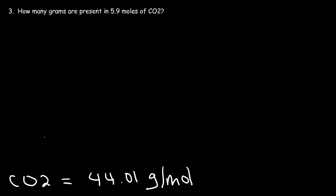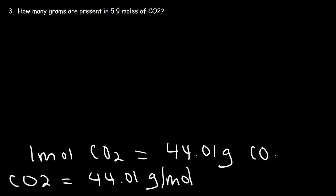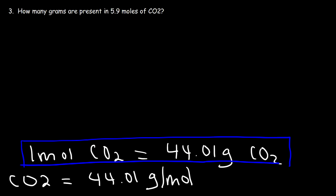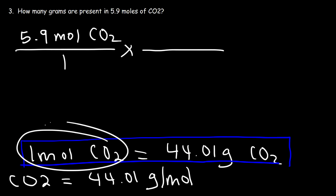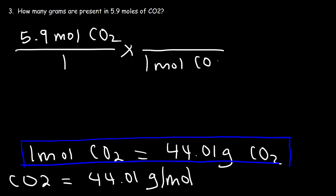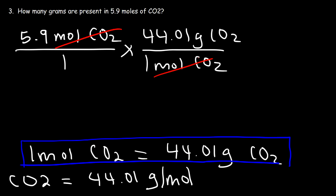Now we can write our conversion factor: one mole of carbon dioxide (CO₂) has a mass of 44.01 grams. Once we have our conversion factor, we can convert from moles to grams. Start with what we're given: 5.9 moles of CO₂. In the second fraction, 1 mole of CO₂ goes on the bottom and 44.01 grams on top. All we need to do is multiply the number of moles by the molar mass: 5.9 times 44.01 equals 259.659 grams of CO₂.